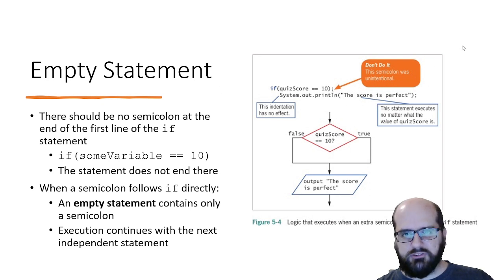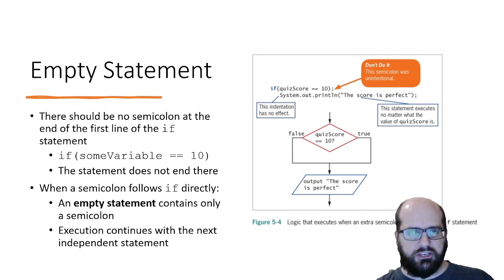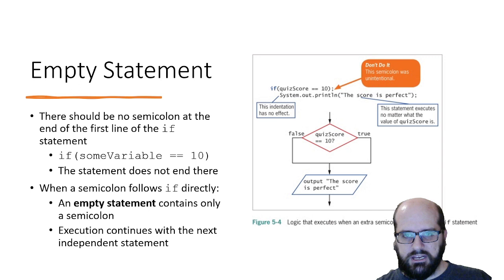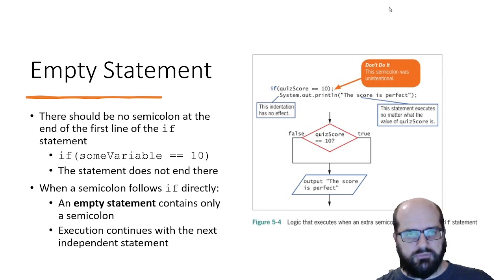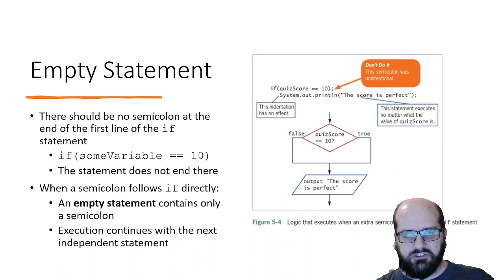It's very important — there should be no semicolon at the end of the if line. If you do that, you end up with an empty block. The next statement is not conditional, so it will execute no matter what the value of quiz score is. When a semicolon follows if directly, execution discontinues without any question.